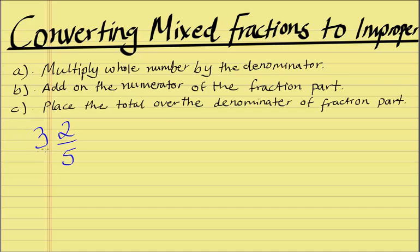so this 3 is our whole number part, so we have 3 wholes and 2 fifths. So, what we first do is, we multiply the whole number part, as I've said here, we multiply the whole number part by the denominator.